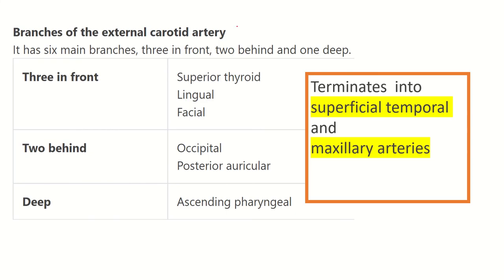The branches of the external carotid artery can also be classified by their anatomical origin: three from the front, two from behind, one deep, and two terminal. So the eight branches are divided into anterior origin, posterior origin, deep or medial origin, and terminal branches.